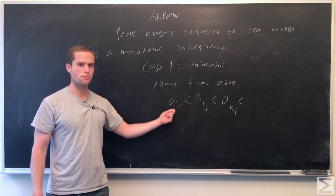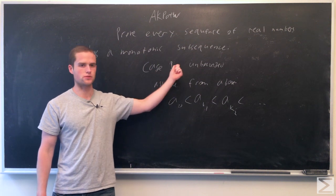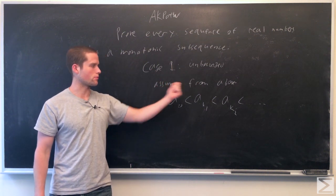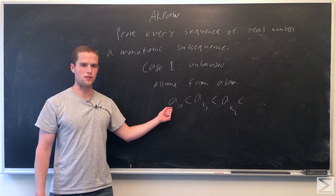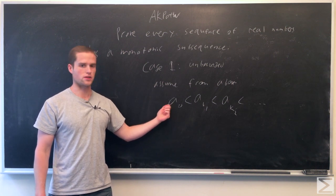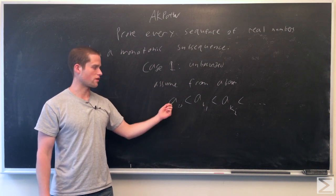For our sequence, first pick A0. We're going to assume our sequence is unbounded and also assume it's unbounded from above. So first pick A0. Now it's unbounded from above, so for any number we can always find a number greater than that number, so a number greater than A0.